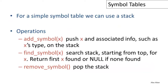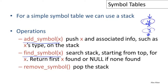For a simple symbol table, we can use a stack with three operations: add a symbol by pushing it with its type; find a symbol by searching the stack from the top for the first occurrence; and remove a symbol by popping. This automatically handles hiding of definitions — if we push a new Y on top of an existing Y, the search finds the new one first, effectively hiding the old definition.